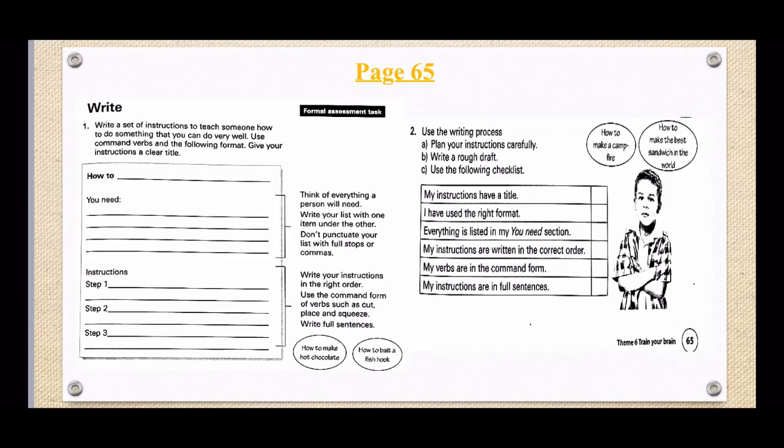Okay, so this block they gave us here of the format that you're supposed to use. If you look on the side, there's little brackets and it says, think of everything a person will need. Write your list with one item under the other. So we know we need to write a list and our list, we know, can count in bullet form. It can be numbered and we know usually when we write a list, there are items that follow each other, follow under each other.